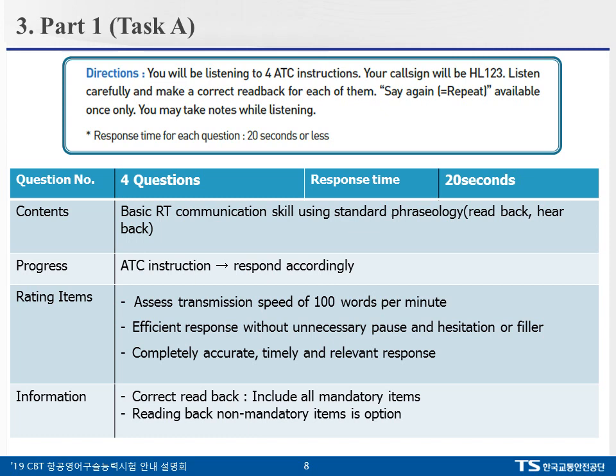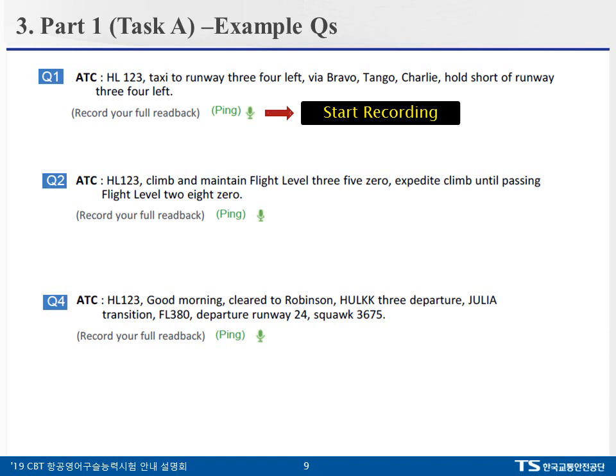The second thing to remember is the appropriate speed produced during read-back. The ideal read-back speed is 100 words per minute. To give you a better idea, here is an example. Question number 1 goes: 'Hotel Lima 123, taxi to runway 34L via Bravo Tango Charlie, hold short of runway 34L.' Now, here is a sample response: 'Taxi to the runway 34R via Bravo Charlie Tango, hold short on runway 34, Hotel Juliet 124.'